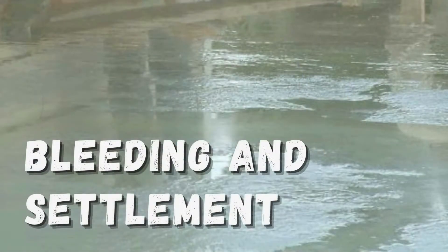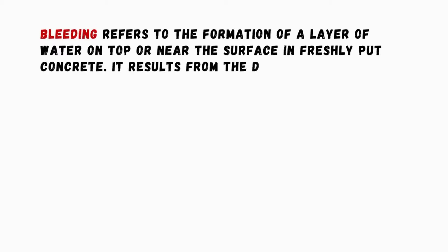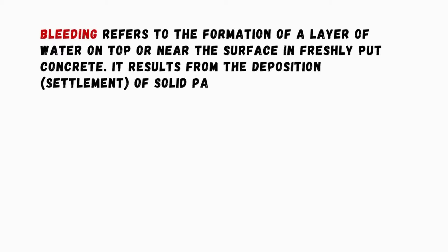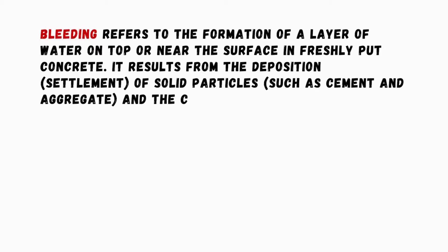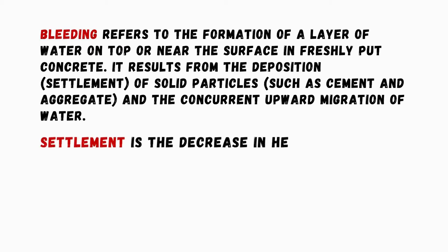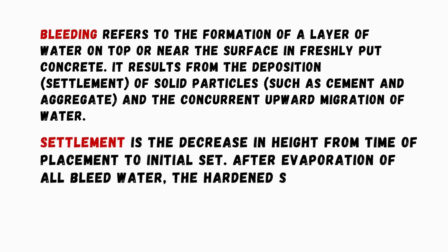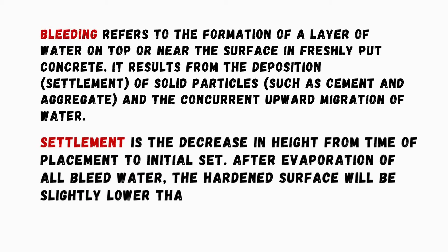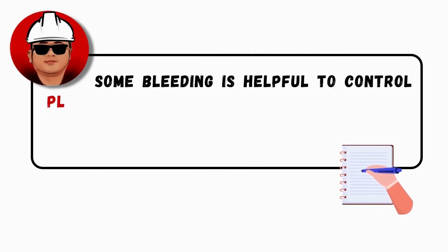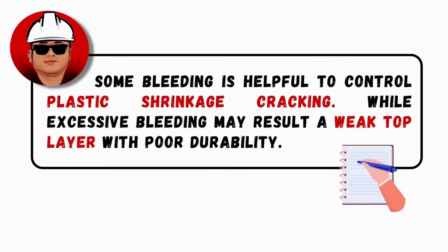Bleeding in Settlement: Bleeding refers to the formation of a layer of water on top or near the surface in freshly placed concrete. It results from the deposition and settlement of solid particles, such as cement and aggregate, and the concurrent upward migration of water. Settlement is the decrease in height from time of placement to initial set. After evaporation of all bleed water, the hardened surface will be slightly lower than the freshly placed surface. Some bleeding is helpful to control plastic shrinkage cracking, while excessive bleeding may result in a weak top layer with poor durability.